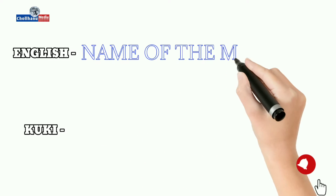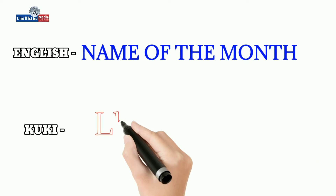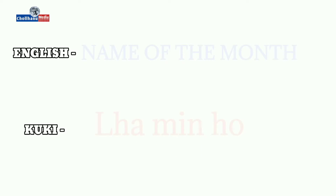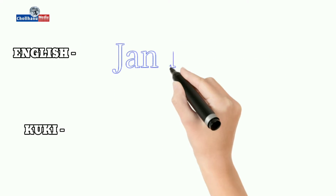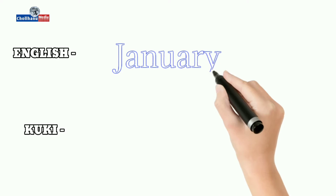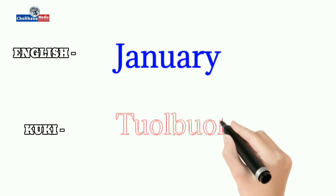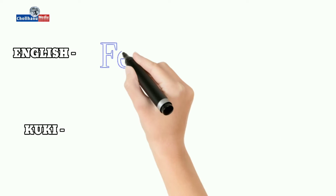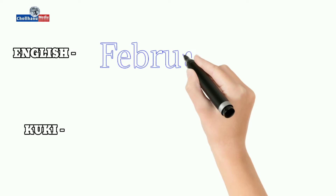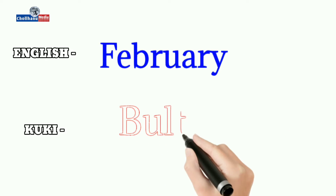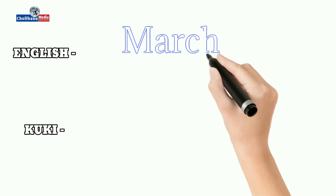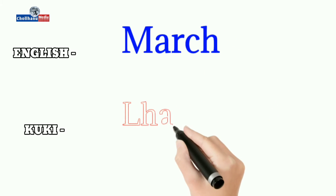Name of the months: La Mint Ho. January: Tulbol. February: Bulte. March: Lhakao.